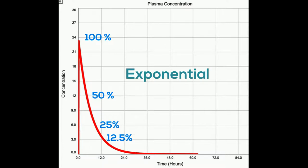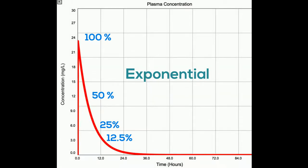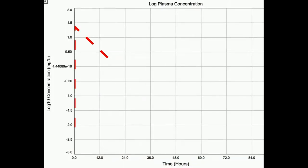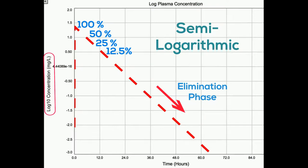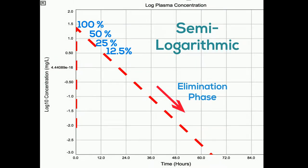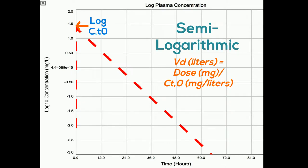As it is often difficult to accurately trace an exponential line, a common mathematical strategy is to transform the drug concentration to the logarithm of the drug concentration. When the y-axis is changed into a logarithmic scale — what we call a semi-logarithmic plot — the curve now turns into a nearly straight line, clearly demonstrating what is called the elimination phase. Using a semi-log plot in a single-compartment model, the assumption is that the drug distributes almost instantaneously into tissues, and extrapolation back to the concentration at time zero can be used to calculate the volume of distribution. For clinical pharmacokinetic approximations, a one-compartment model is usually accurate enough.